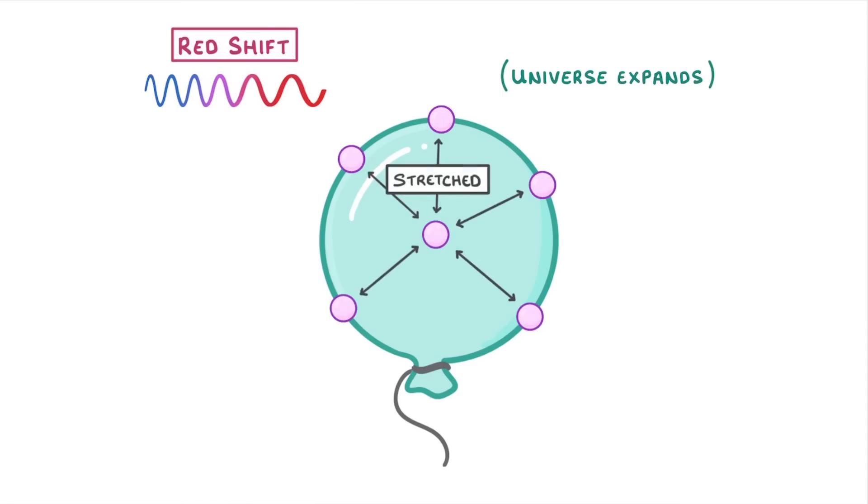We can model this by imagining a balloon that's covered in little markers, with the balloon representing the universe, and the markers representing all of the galaxies. As we blow up the balloon, which represents the universe expanding, the galaxies all get further apart. But importantly, this happens because the space between them gets stretched, rather than any of the individual markers moving across the surface of the balloon.